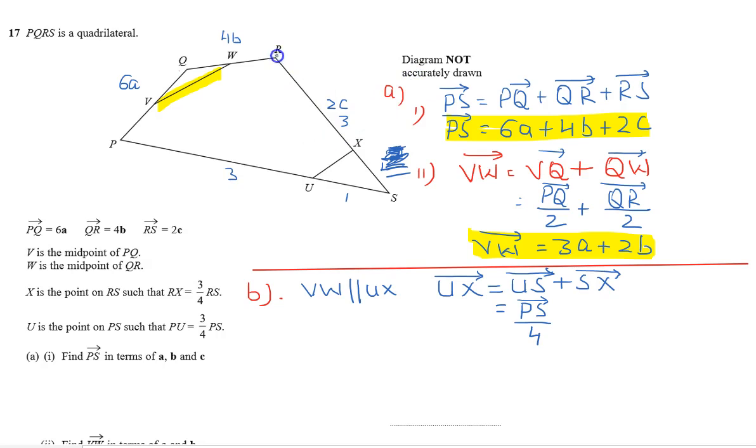SX is a part of RS, also dividing it into 3 to 1. We are finding SX, so it will be negative RS over 4.